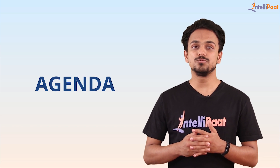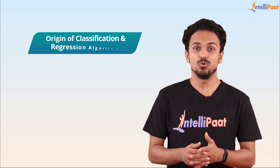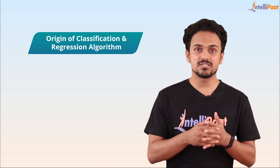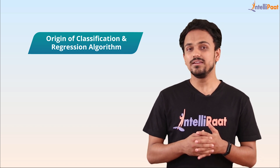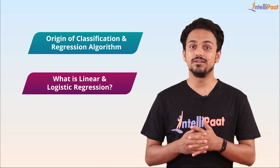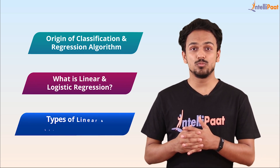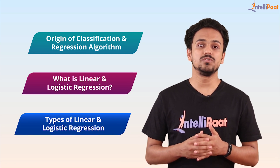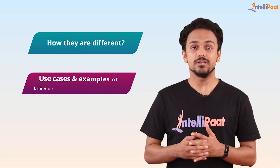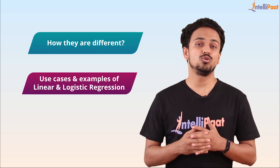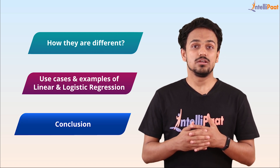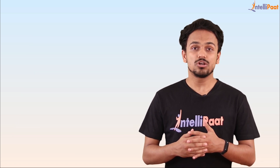Here's the agenda for this video. First, we'll dig into the origin of both classification and regression algorithms. Then we'll understand both algorithms, what exactly linear regression and logistic regression are, followed by their types. We'll discuss the parameters used to differentiate between them, look into use cases and examples, and finally wrap up with a conclusion and a short quiz.